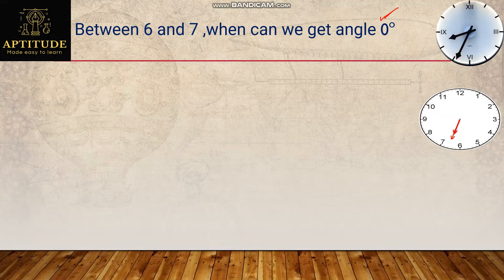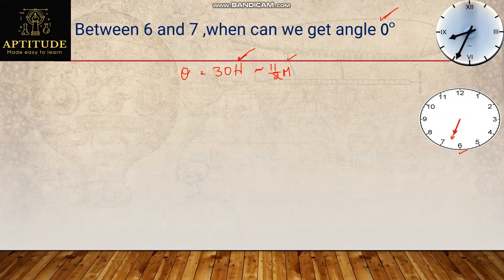Then how do we solve this? Theta equals 0 — just use the reverse process. Generally, theta = 30H minus 11/2 · M. In all other cases we find the angle using hours and minutes. Here, we already know hours will be 6 (since time is between 6 and 7), and we need to find the exact minutes. Theta is 0 degrees.